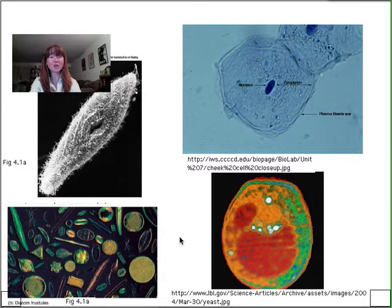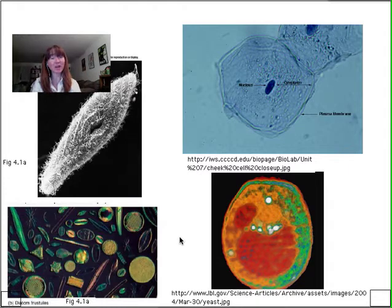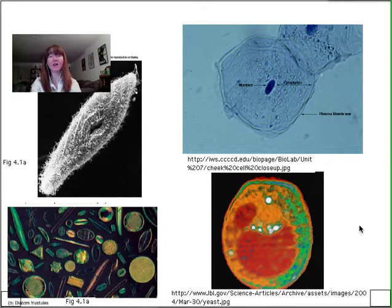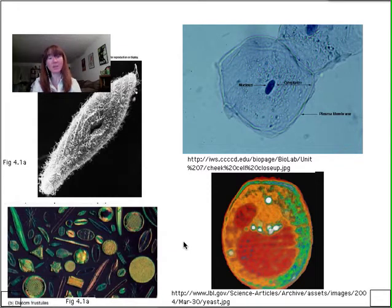On the lower right we see a yeast cell, and on the lower left a diatom. These two are similar to paramecium in that they're unicellular organisms. But unlike paramecium, diatoms are photosynthetic — we recognize them as having a photosynthetic pigment. Yeast cells have a cell wall, as do diatoms, but obviously it doesn't contain peptidoglycan, so very different from a bacterial cell wall.